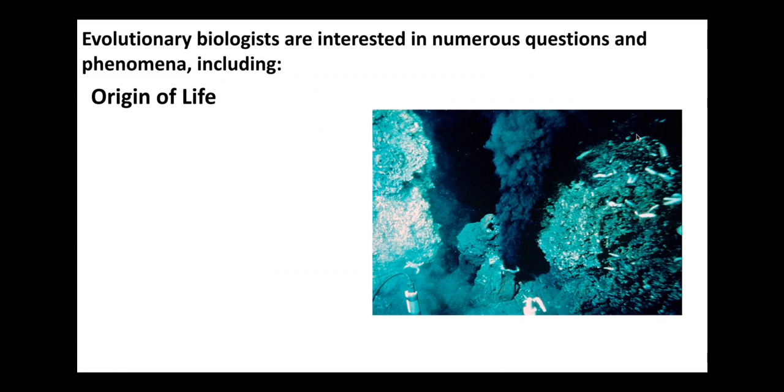So evolutionary biologists are interested in a large number of things, and evolutionary biologists work closely with a lot of similar disciplines. Often people might call themselves an evolutionary biologist, but they also might call themselves something else like a paleontologist or evolutionary ecologist or an ecologist or an anthropologist.